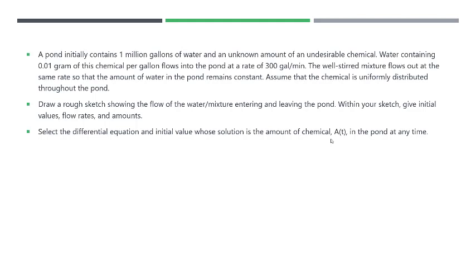The pond mixes the chemical and water up and there's an outflow where water flows out at the same rate so that the amount of water in the pond remains constant. Assume that the chemical is uniformly distributed throughout the pond.